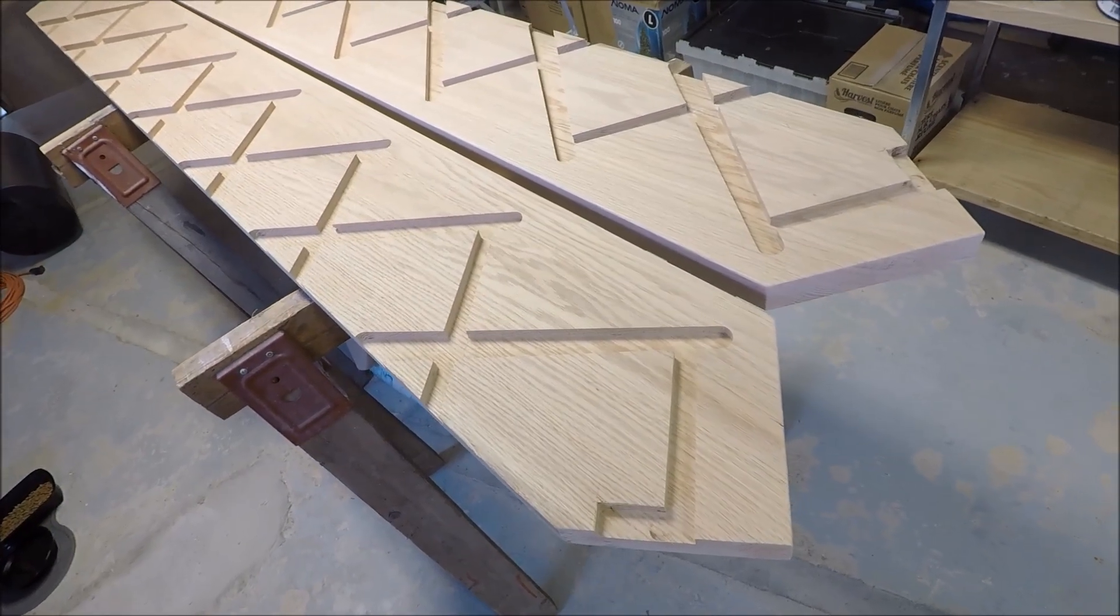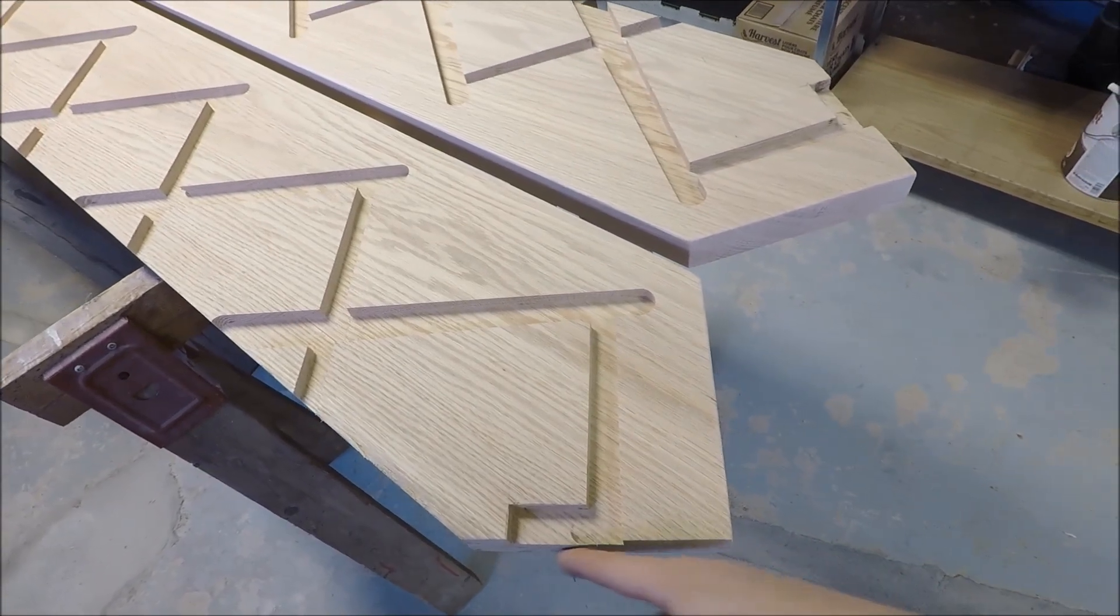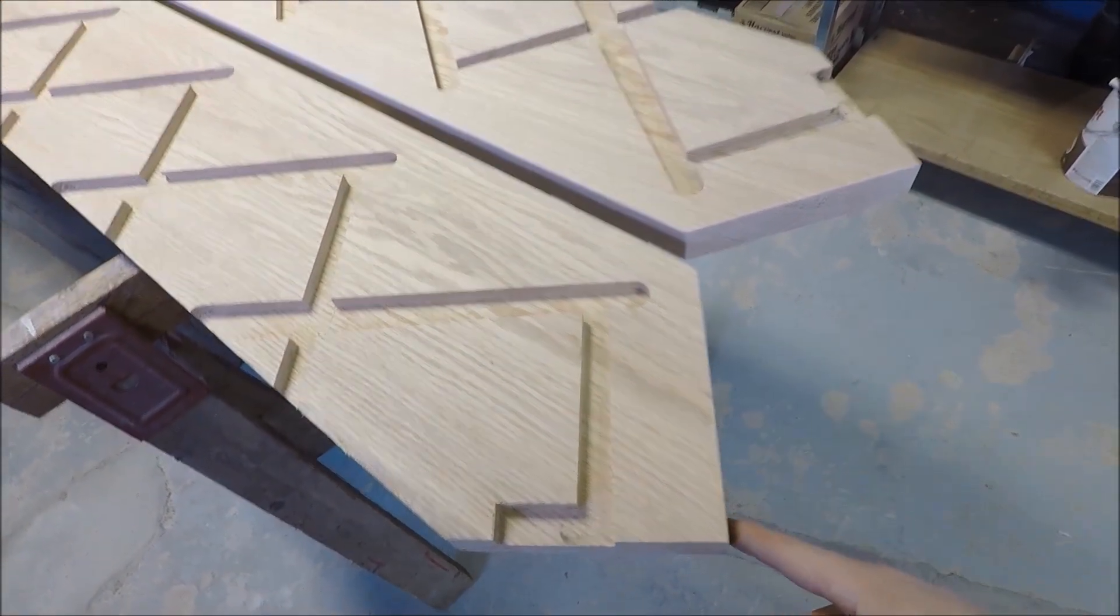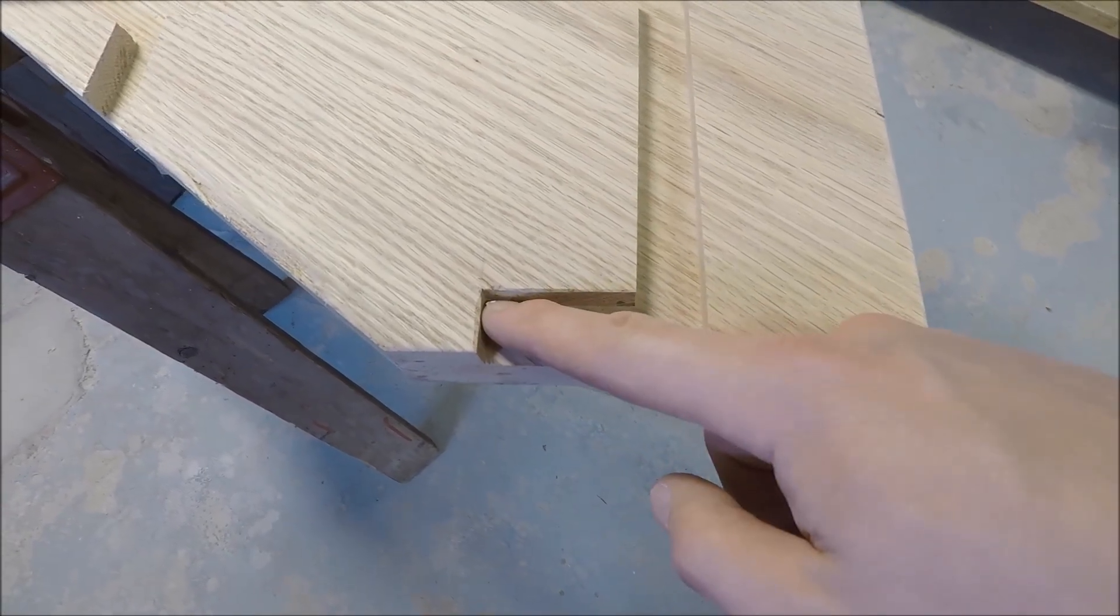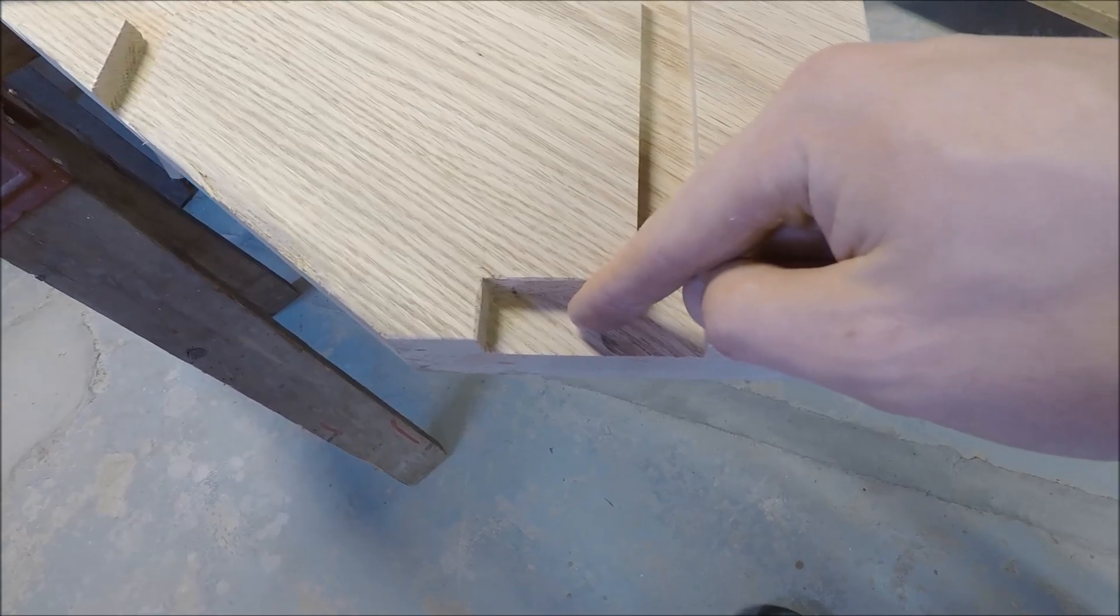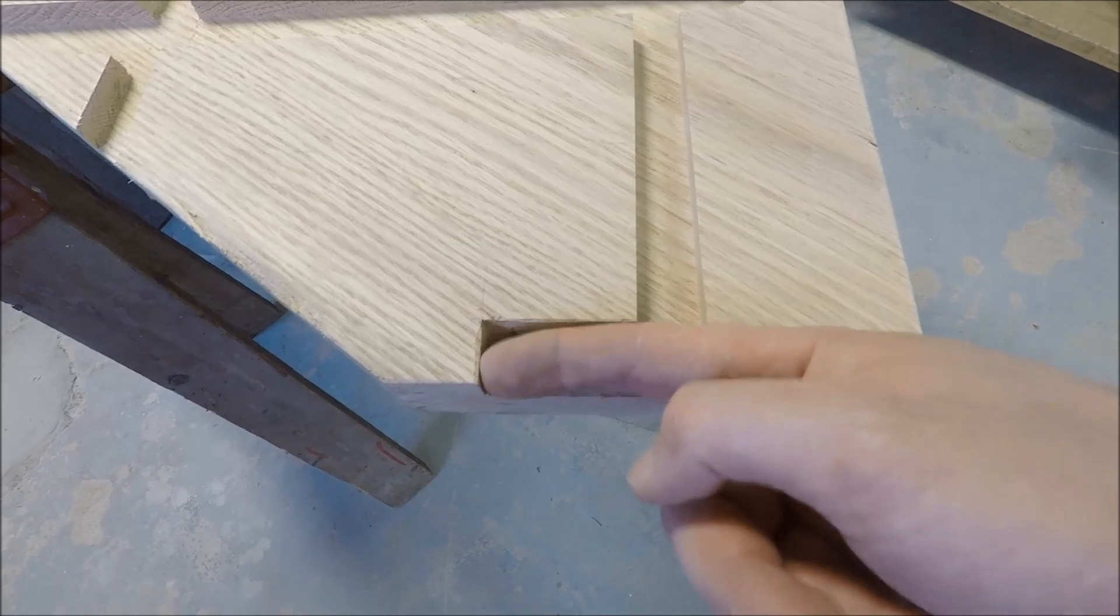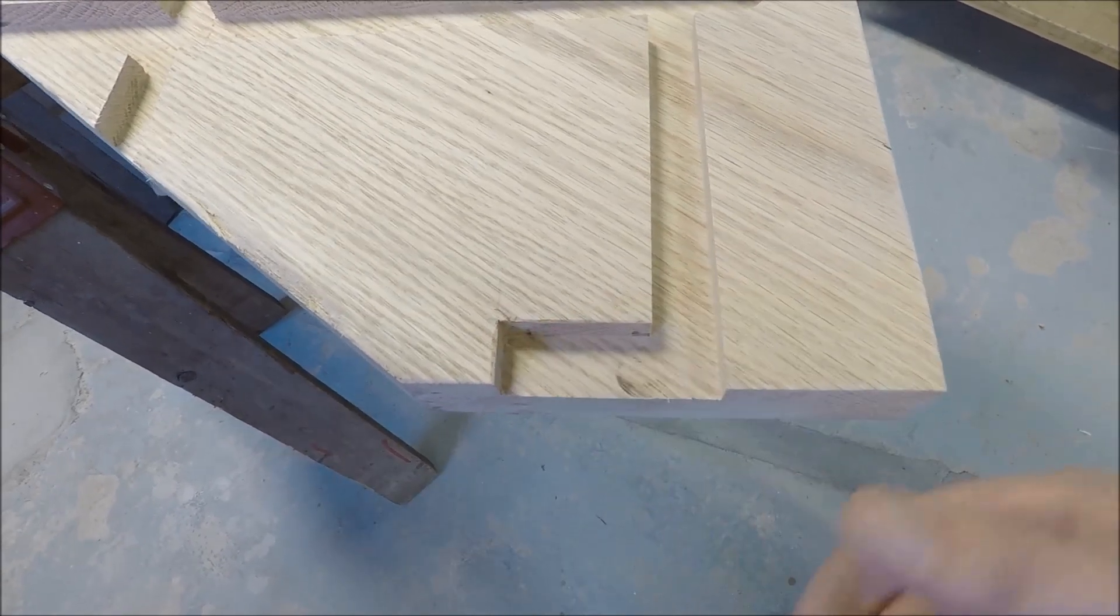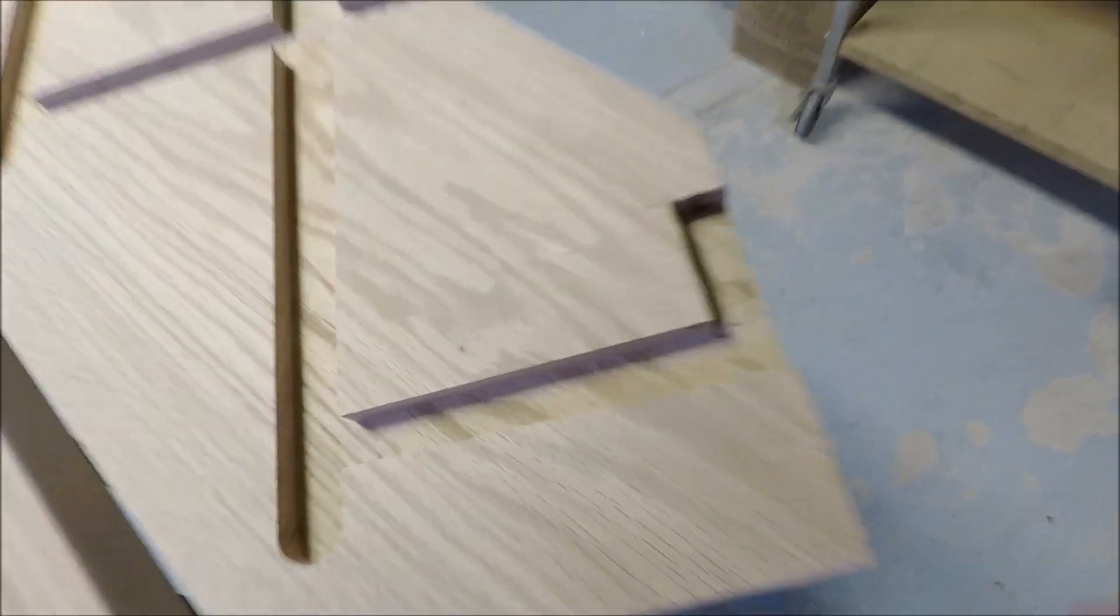Now, you can see here on the bottom end of the stringer, I have also cut it to length. And another thing I've done is used the same router setup and made a notch here. So I can permanently secure another clip to the cement floor that will rest against the back face of the stringer here. And that will stop it from sliding out. And I've done that to both ends here.